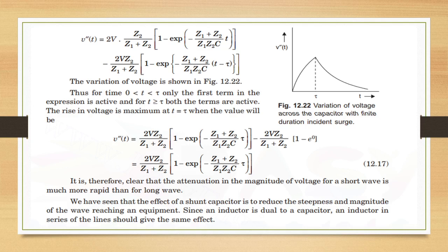The rise in voltage is maximum at t = τ. The second term at t = τ equals zero (e⁰ = 1, making the bracket zero), so only the first term remains. It is clear that the attenuation in magnitude of voltage for a short wave is much more rapid than for a long wave. The effect of a shunt capacitor is to reduce the steepness and magnitude of the wave reaching equipment. Since an inductor is dual to a capacitor, an inductor in series with the line should give the same effect.